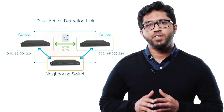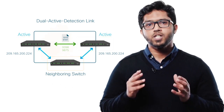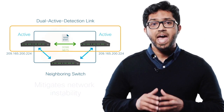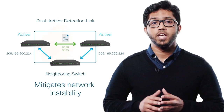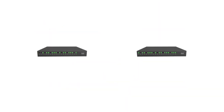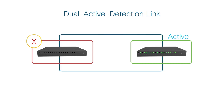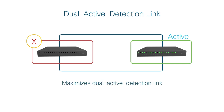Here's where the dual active detection link comes into play. It detects a dual active scenario and mitigates network instability. If a StackWise Virtual link fails, the StackWise Virtual standby switch initiates a switchover and takes over the role of the active switch immediately, minimizing traffic disruption.